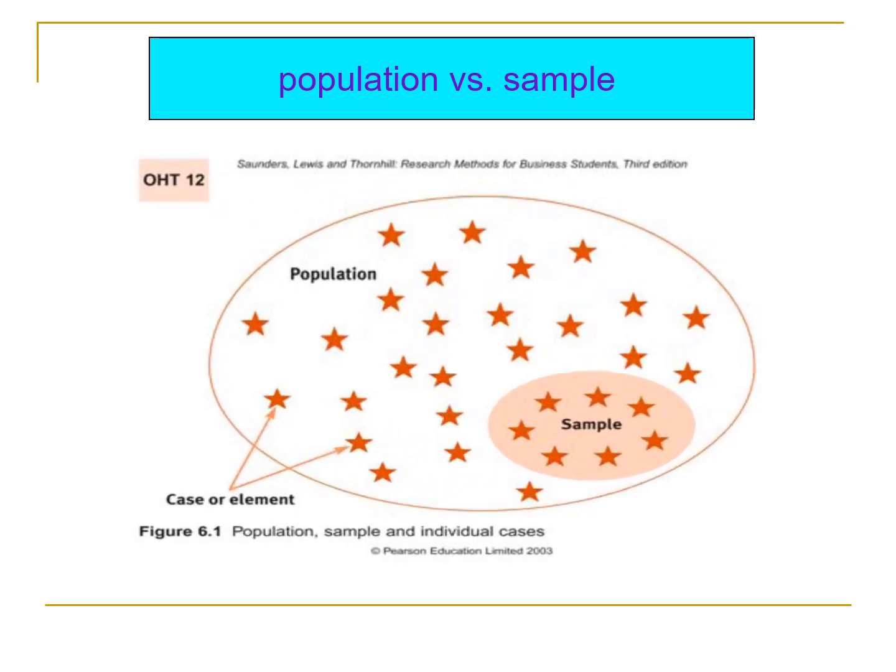In the figure, all stars inside the oval is the population, while the stars inside the shaded oval is what we call the sample. Basically, sample is just a part of the population or a subset of the population.